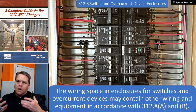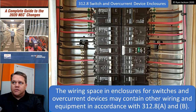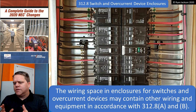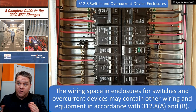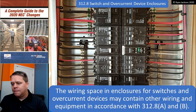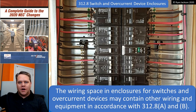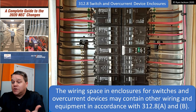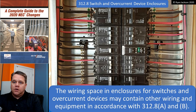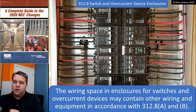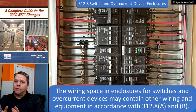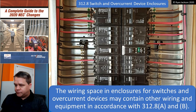We're in Article 312, which covers cabinets, cutout boxes, and meter socket enclosures. A lot of people get confused on what those are. A meter socket enclosure is self-explanatory — it's the enclosure a utility meter goes in. A cutout box is a switch enclosure — when you have a fused switch, you install it in a cutout box. A cabinet is what we're looking at in the photograph: that's a panelboard mounted in a cabinet. The cabinet is the enclosure; the panelboard is actually just the guts — the bus bars.